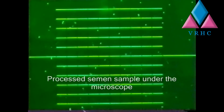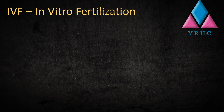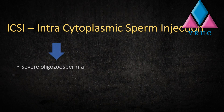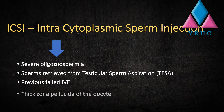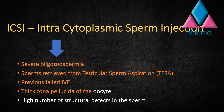Based on many factors, the embryologist decides whether to perform IVF, ICSI, or both. Indications to perform ICSI include severe oligozoospermia, sperms retrieved from testicular sperm aspiration (TSA), previous failed IVF, thick zona pellucida of the oocyte, and a high number of structural defects in the sperm.